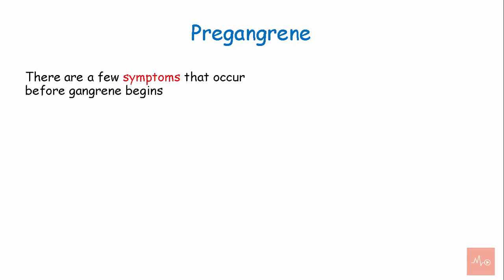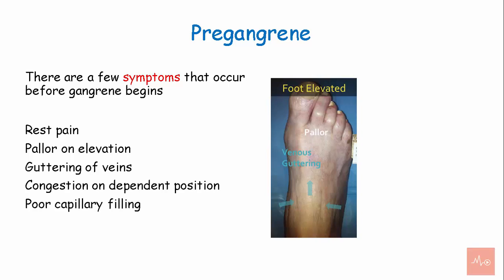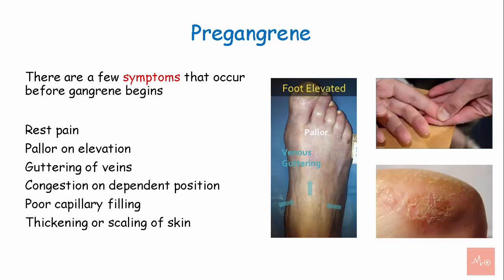There are a few symptoms that occur before gangrene begins. This is known as pre-gangrene: rest pain, pallor on elevation, guttering of the veins, congestion on dependent position, poor capillary filling, and thickening or scaling of skin.